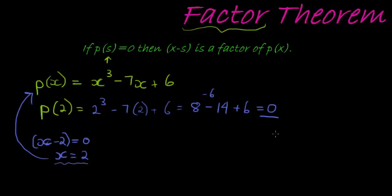Now, whenever I have a 0 remainder, it means x minus 2, in this case, is a factor.